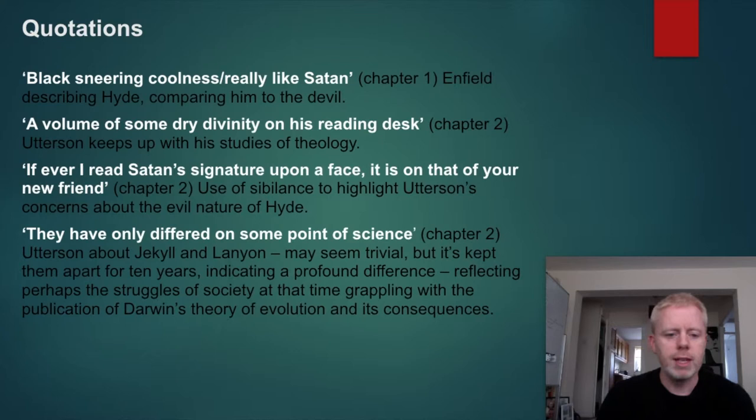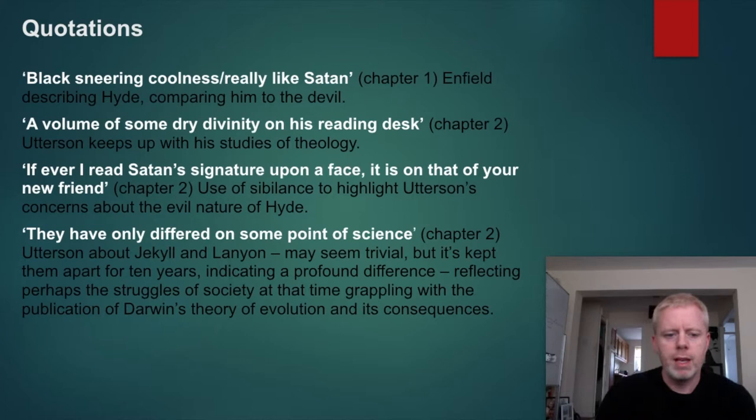'They have only differed on some point of science' is Utterson's explanation for how Jekyll and Lanyon fell out. It may seem trivial, but it has kept them apart for ten years, indicating a profound difference, perhaps reflecting the struggles of Victorian society grappling with the publication of Darwin's theory of evolution and its consequences.